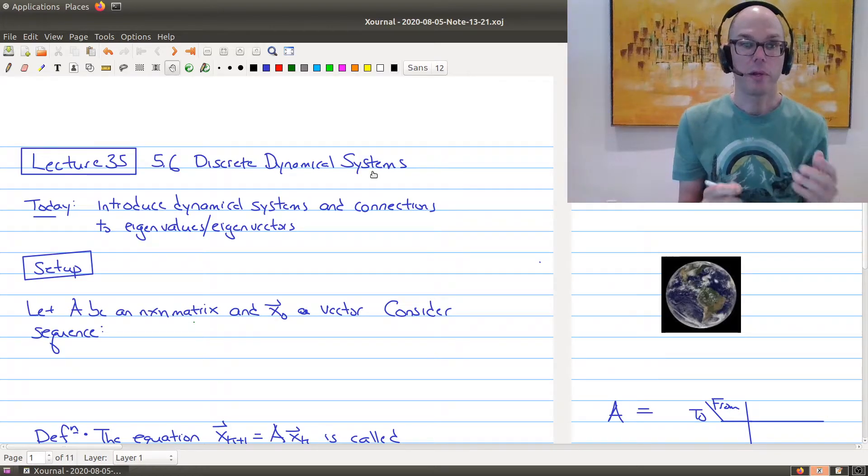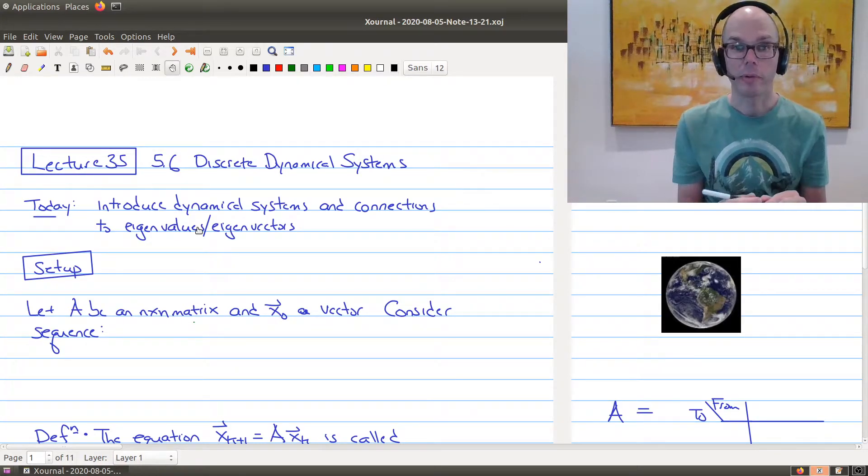I'm first going to introduce what we mean by a discrete dynamical system and then explain the connections to eigenvalues and eigenvectors. You might want to think of this particular lecture as an application of eigenvalues and eigenvectors.